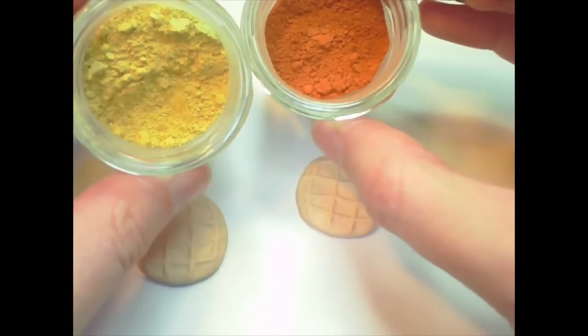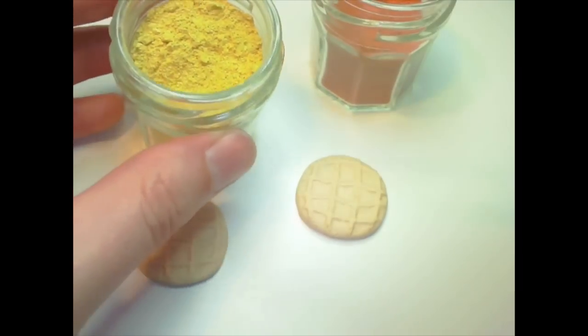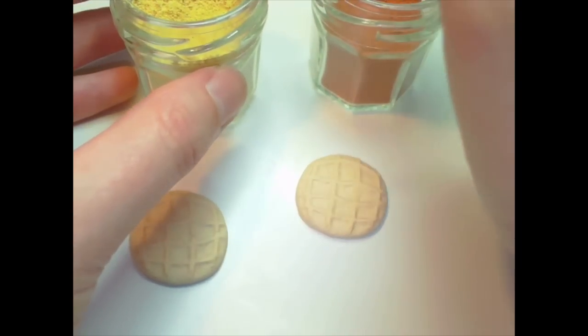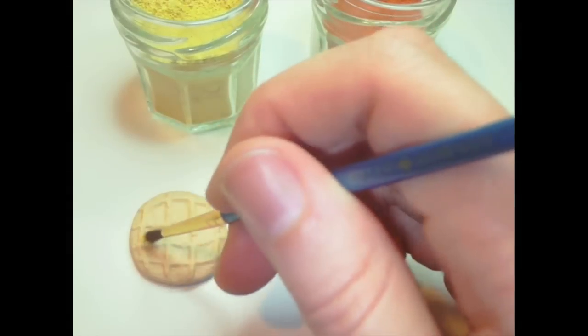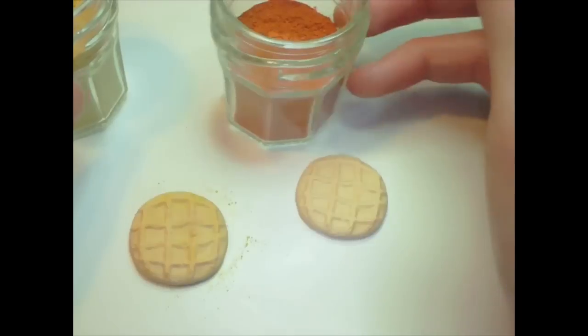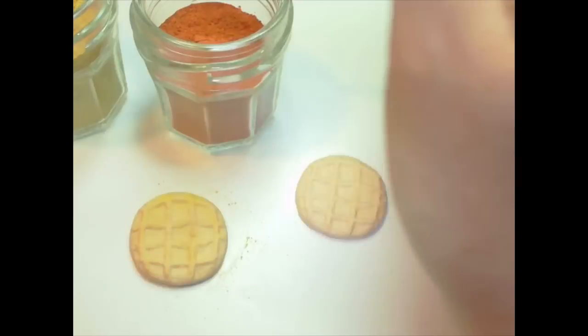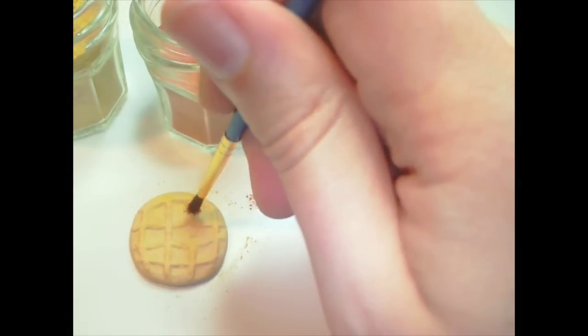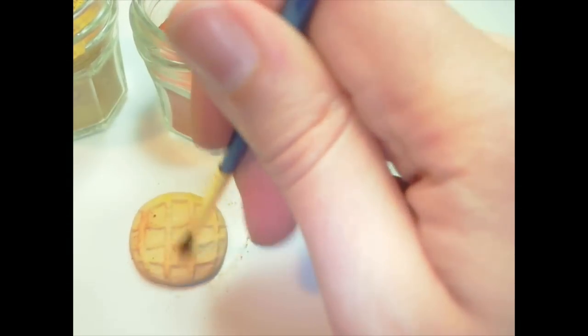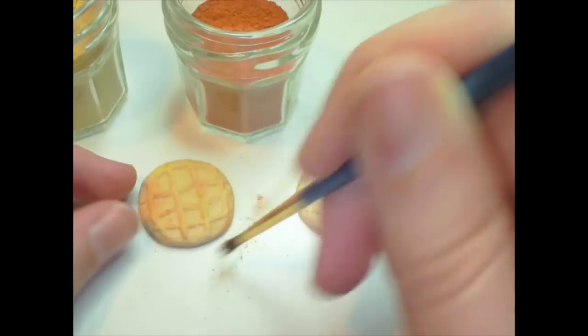Then to make it look more realistic, you can brush on some soft pastel chalks. I'm using a yellowish color for the base, because the cookies in real life are kind of a yellow tone. And then for the highest parts that are sticking out, brush on some reddish brown.